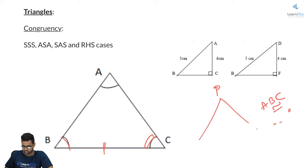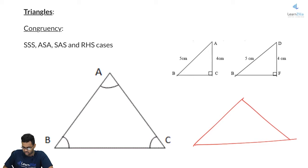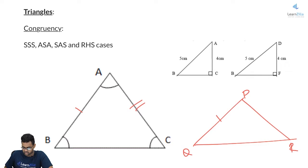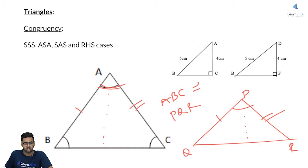Now let us learn the SAS congruency rule. Under this rule, you are talking about side, angle, and side. I have my triangle PQR. This side and this side are the same, this side and this side are the same, and this angle and this angle are the same. That will push us to accept that triangle ABC is congruent to triangle PQR, because you are talking about the included angle. That is the side-angle-side analogy.